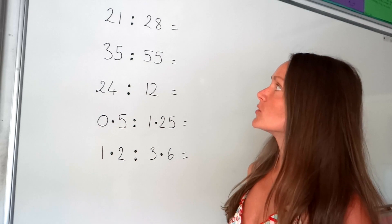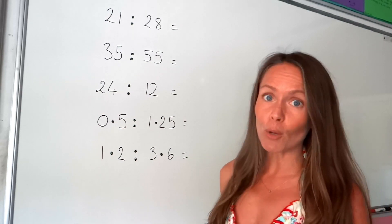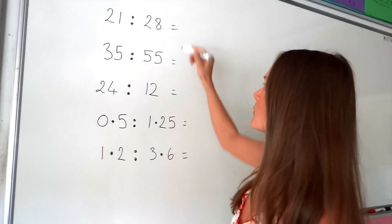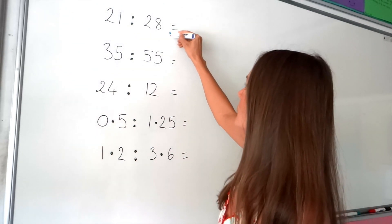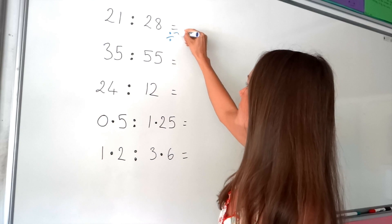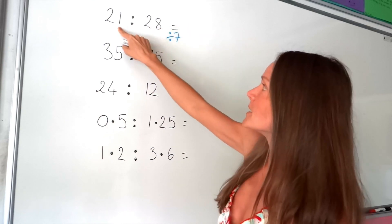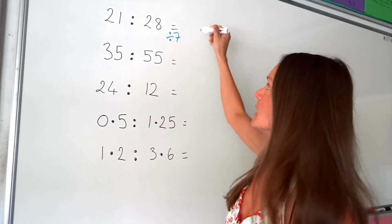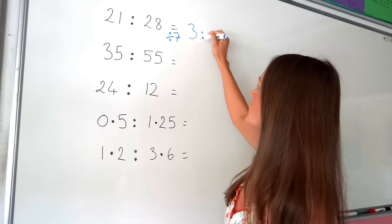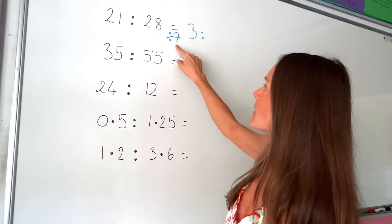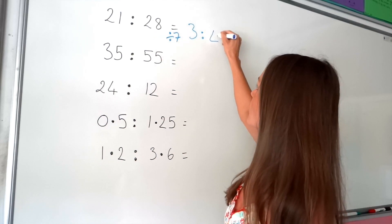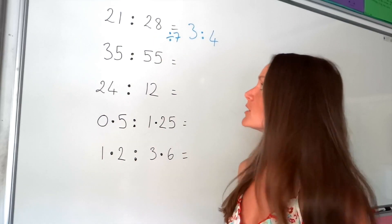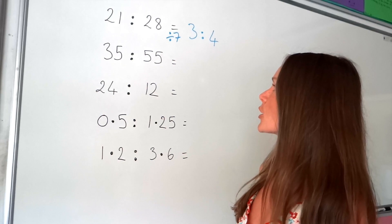So that means we have to divide both of those numbers by 7. If I divide 21 by 7, I get 3. And if I divide 28 by 7, I get 4. So that's it — we've simplified the first ratio.